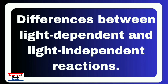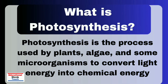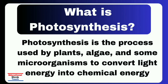Photosynthesis is the process used by plants and some microorganisms to convert light energy into chemical energy. They use sunlight, water, and carbon dioxide to create their own food in the form of sugar, with oxygen released as a by-product. This process is essential for nearly all life on Earth, as it produces the oxygen we breathe and is the base of most food chains.